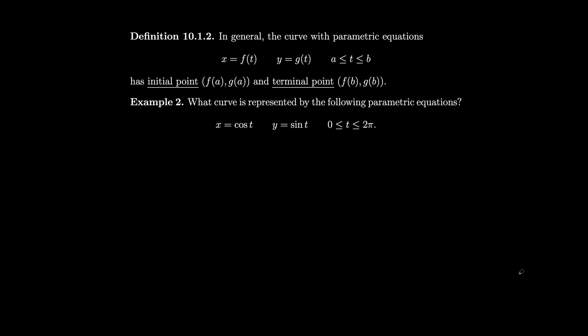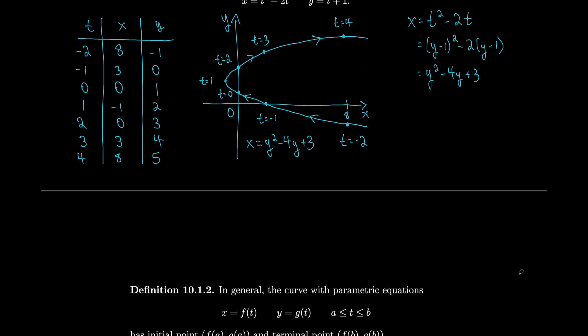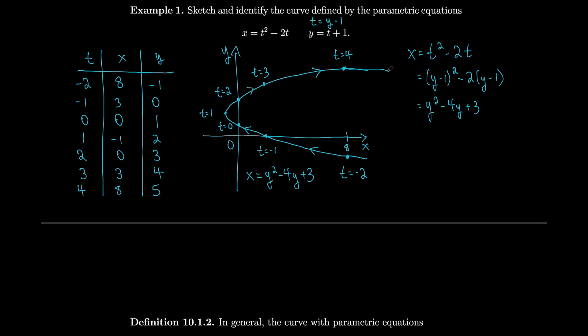In general, the curve with parametric equations x equals f of t, y equals g of t, where t ranges from a to b, has initial point f(a), g(a) and terminal point f(b), g(b). In our previous example, t ranged from minus 2 to 4. But with no restriction on t, the parabola continues in both directions. When t is restricted — say from 1 to 4 — you only get a piece of the curve, with initial point (negative 1, 2) and terminal point (8, 5).